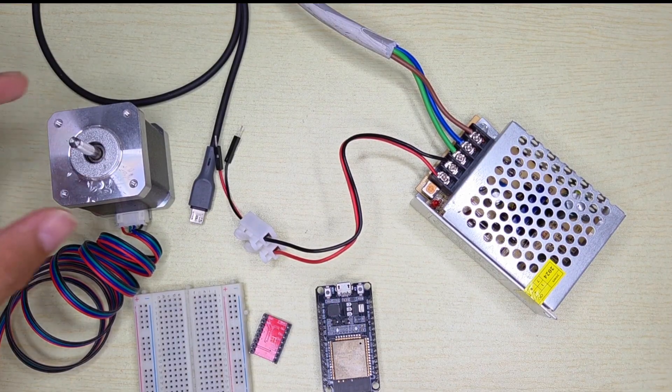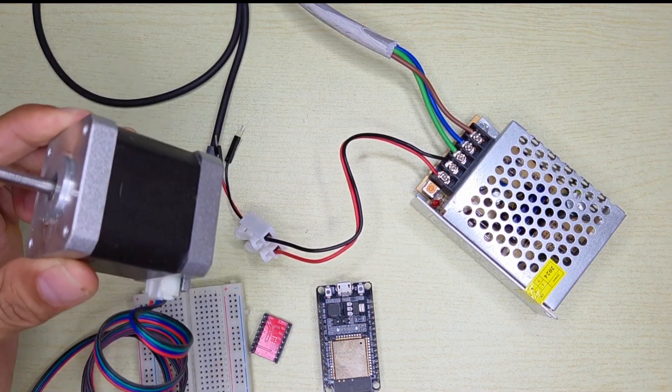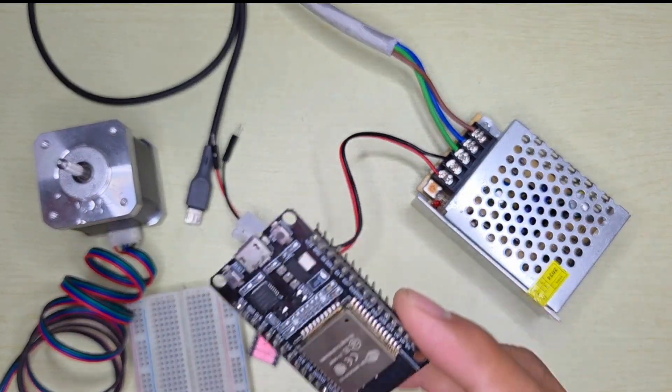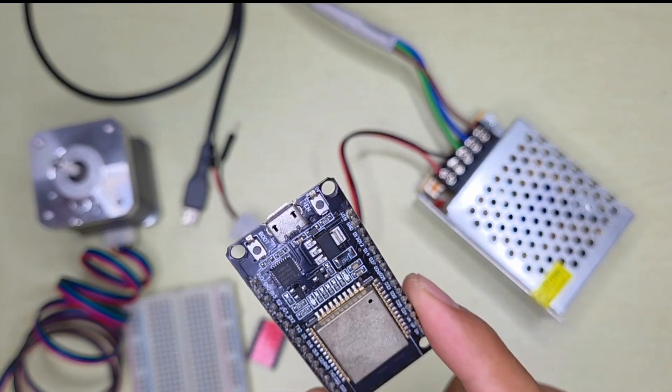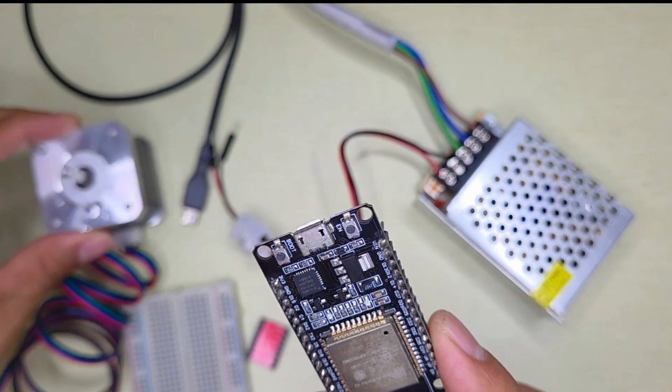For this video, I want to share how we can control a 12-volt NEMA 17 stepper motor using an ESP32 microcontroller. We're going to use the ESP32 which has Bluetooth and Wi-Fi built in, but we're not going to use those features. We're just going to use it to control the motor in a very simple way.